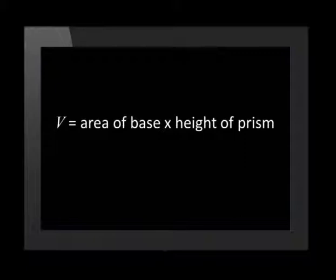Provided you can identify the base of a right prism, you will find calculating volume of any right prism quite simple with the following formula. The volume of any right prism is equal to the area of the base multiplied by the height of the prism.